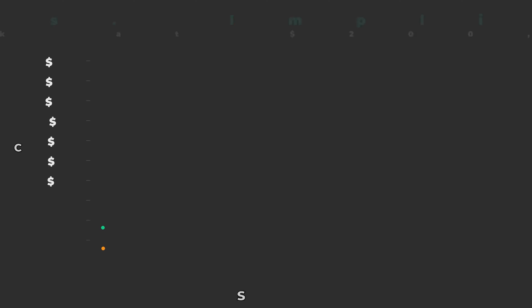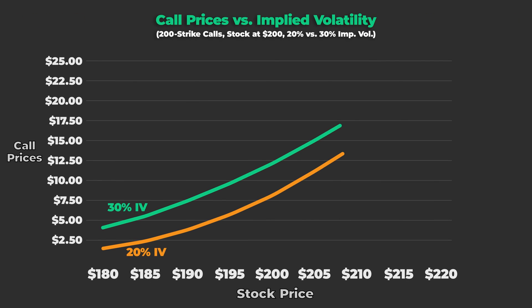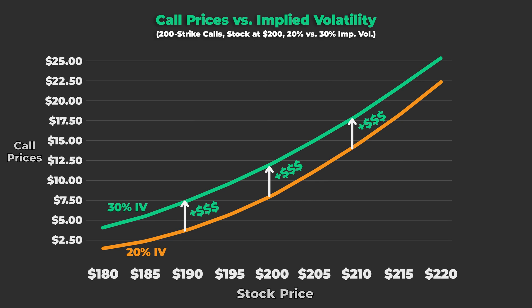Using an option pricing simulator, let's look at a $200 strike call option on a $200 stock and plot prices at different levels of expected volatility. Assuming the stock price remains constant and no time passes, if you bought the call when implied volatility was 20% and it immediately rose to 30%, you'd profit from the increase in option prices. However, if you bought the call when IV was 30% and it dropped to 20%, you would lose money due to the deflation in option prices as the market factors in lower expected stock price volatility.